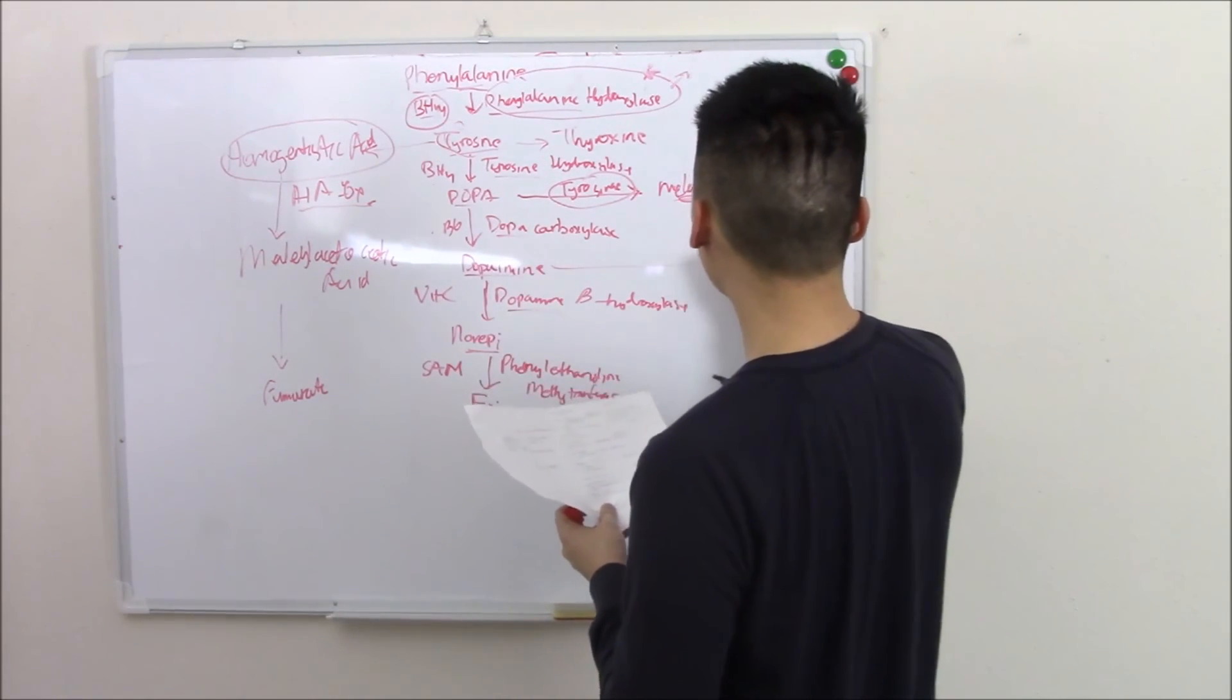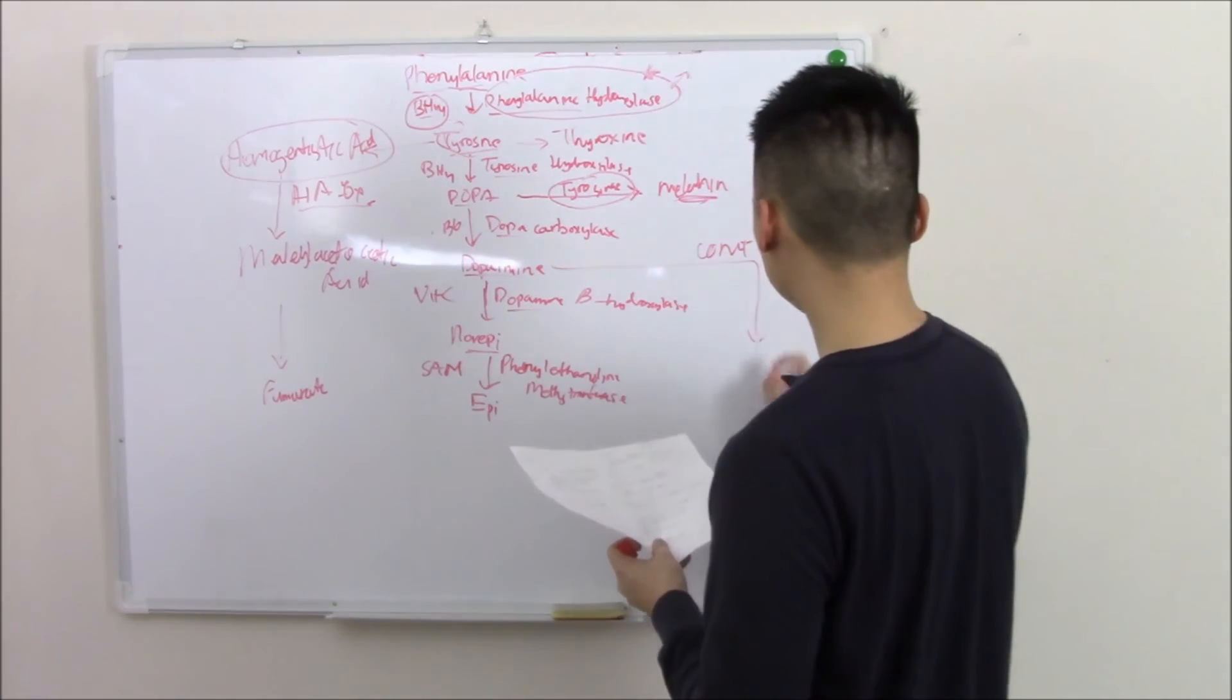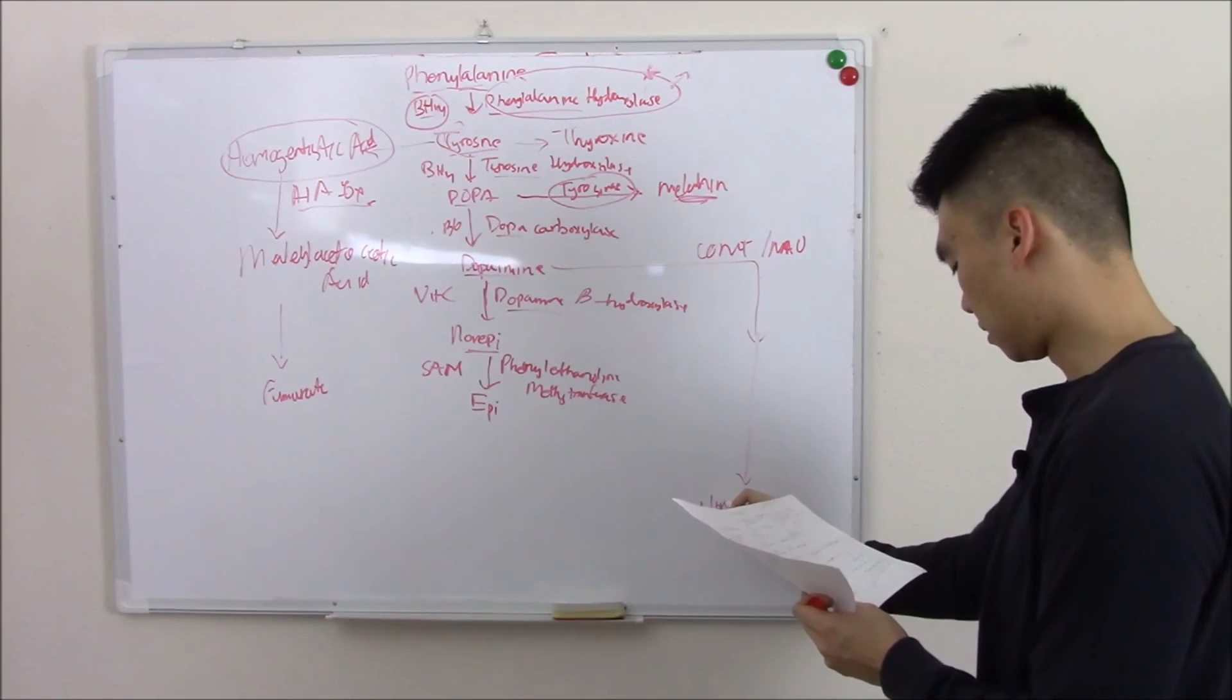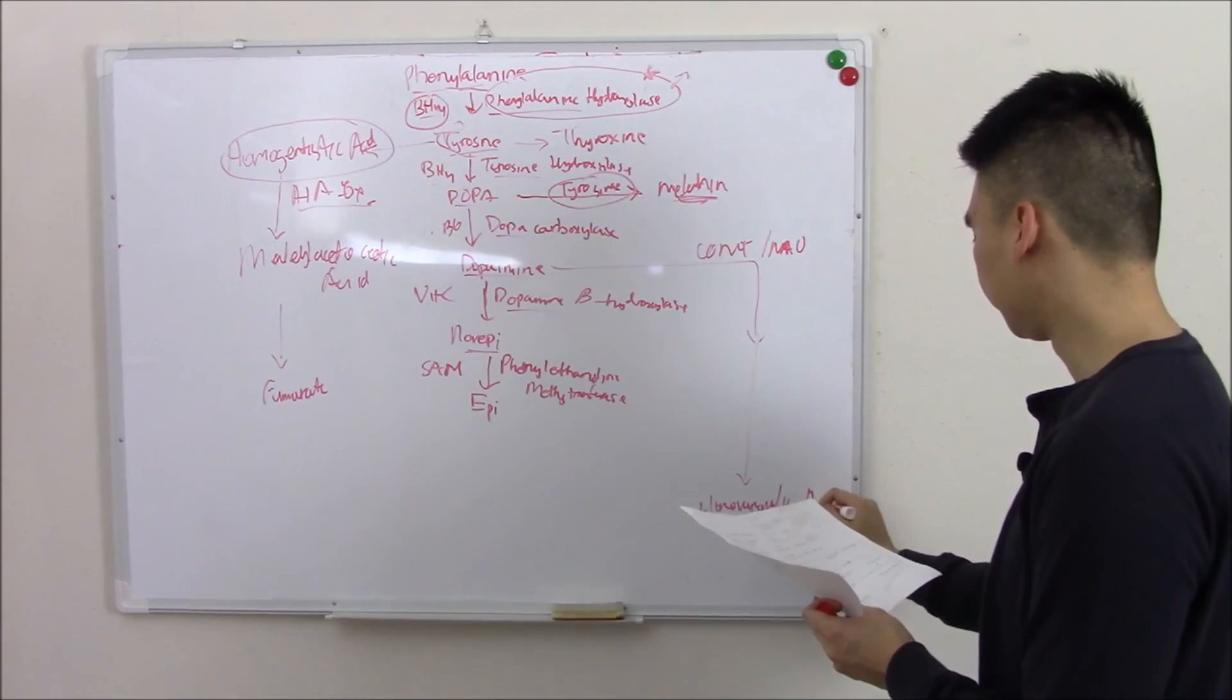Dopamine is broken down by COMT or MAO becomes homovanillic acid.